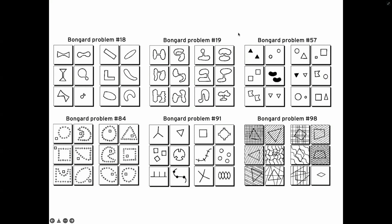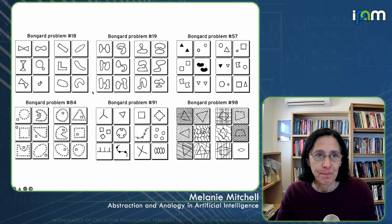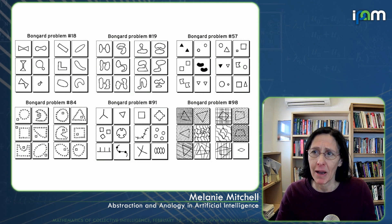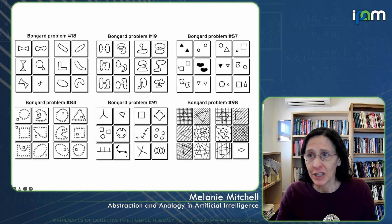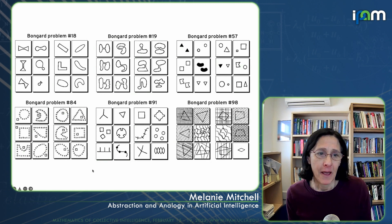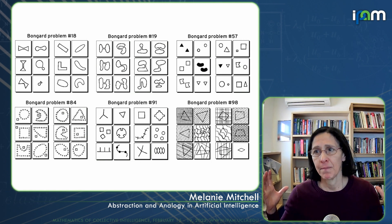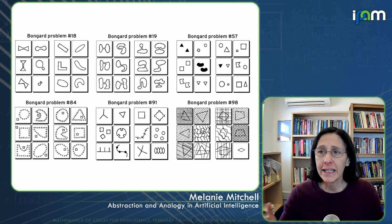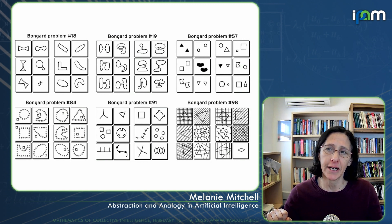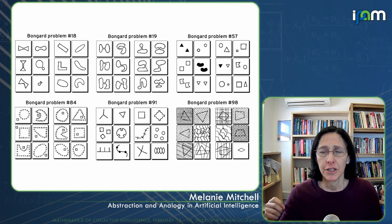Hofstadter sketched out an architecture for solving Vanguard problems, which actually never really got implemented — this was in the 1970s when he was doing this. He was very much in favor of studying the problem of abstraction in AI in these quite idealized domains. This came from his training in physics, in which the idea is to take a natural phenomenon and idealize it as much as possible so that it retains the essence of the phenomenon you're trying to study, and yet is much more amenable to mathematics or computer simulation.